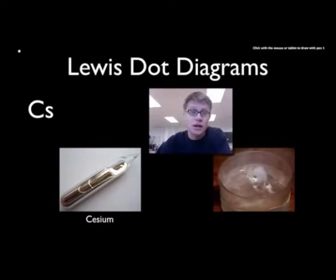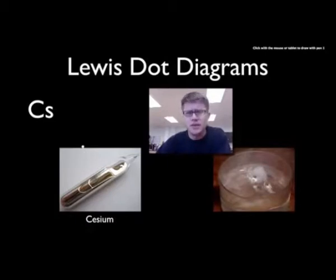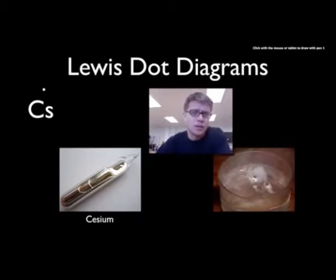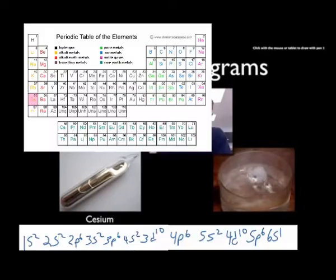Lewis dot diagrams are going to look like this. So if we start with cesium — cesium is a metal. It's got an atomic number of 55, but it's in the first column, and so that makes it really easy on the periodic table. That means it has one valence electron.